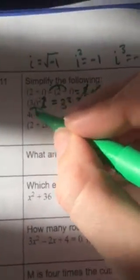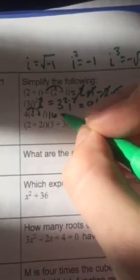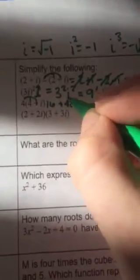When I multiply the 4 in, we get 16 plus 4i, and that cannot reduce. We cannot combine them because they're different terms.